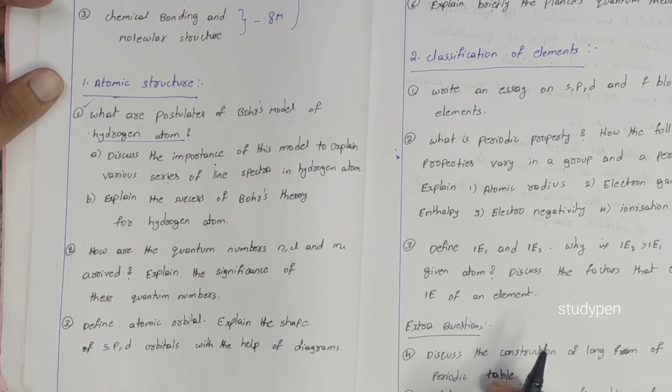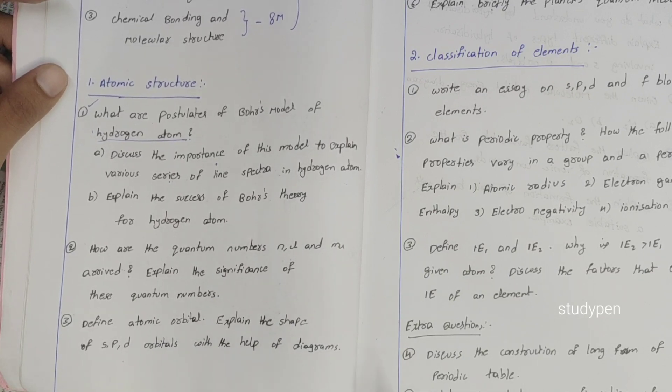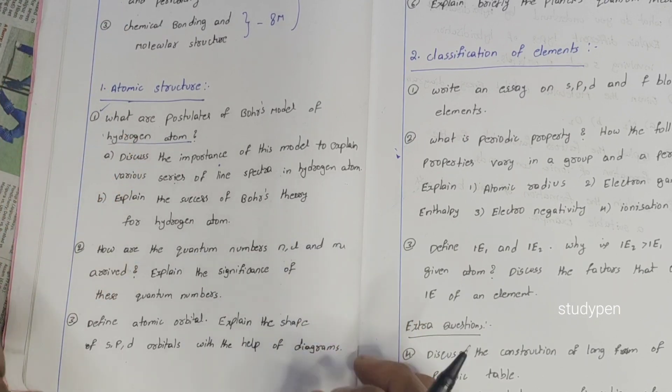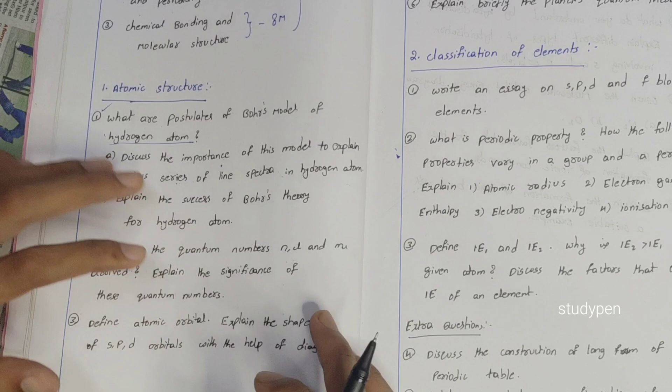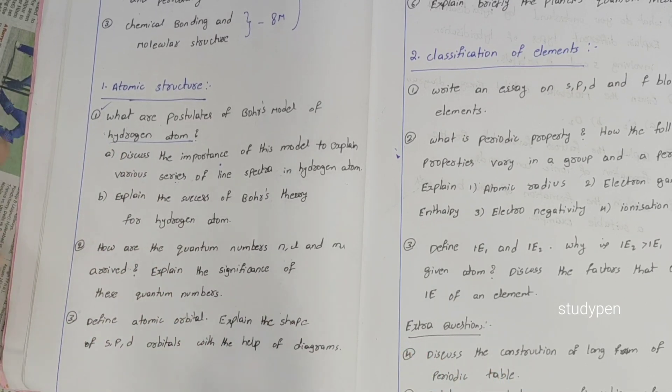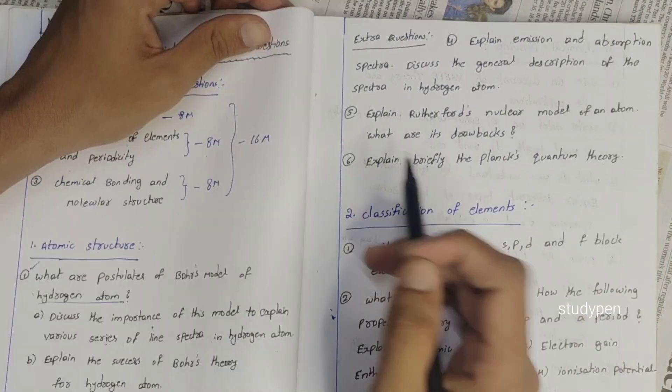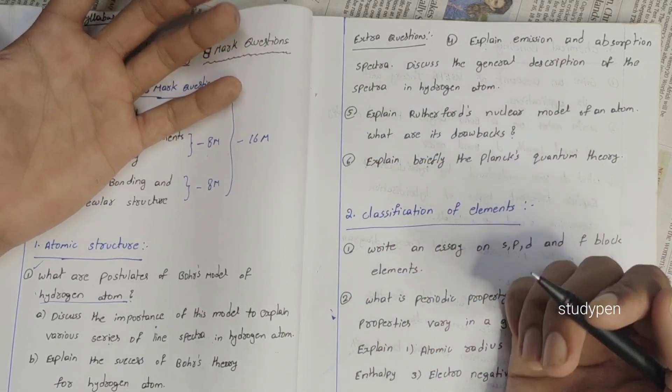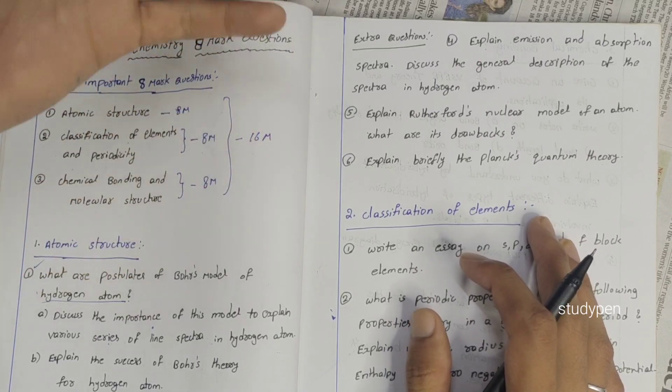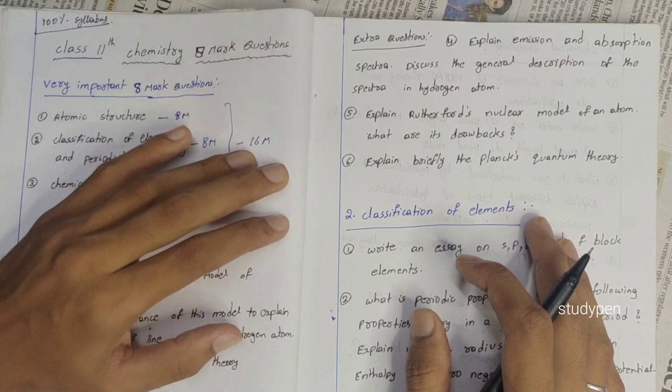Next question: define atomic orbital, explain the shape of s, p, d, f orbitals with the help of diagrams. These three questions are major questions, very important questions. These are 8-mark questions, three questions in depth.